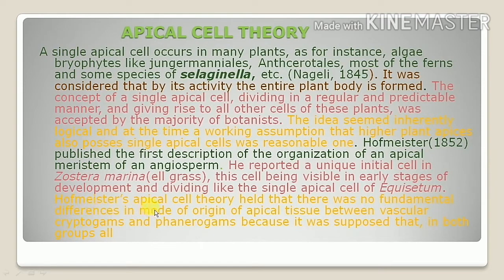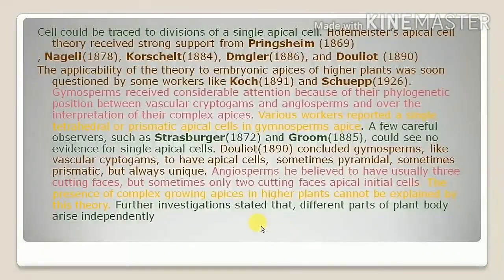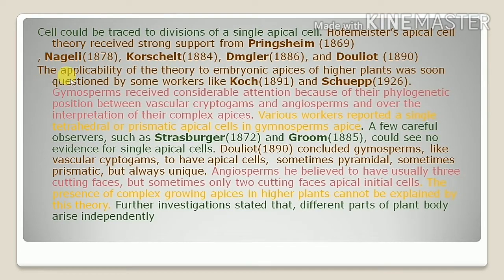Hofmeister reported a unique initial cell in Zostera marina, this cell being visible in early stages of development and dividing like the single apical cell of Equisetum. Hofmeister's apical cell theory held that there was no fundamental difference in the mode of origin of apical tissue between vascular cryptogams and angiosperms, because it supposed that all tissue could be traced to the divisions of a single apical cell.